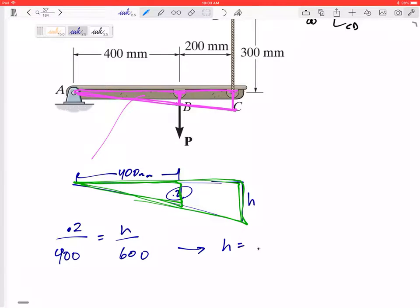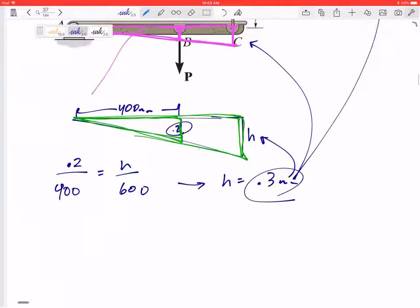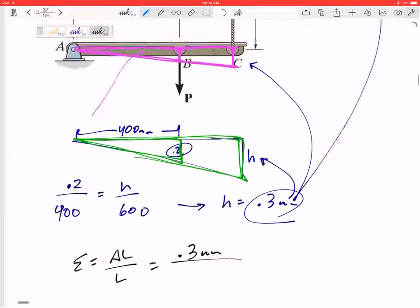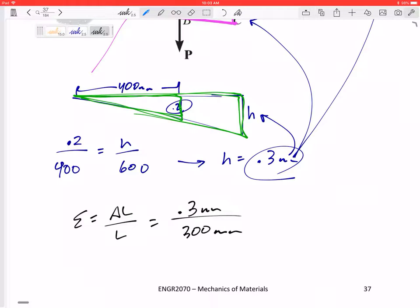That would give me H is 0.3 millimeters, and that is right here—that is the change in length of cable CD. So epsilon is delta L over L. It changes 0.3 millimeters, its original length was 300, and so that's 0.001. It's unitless.